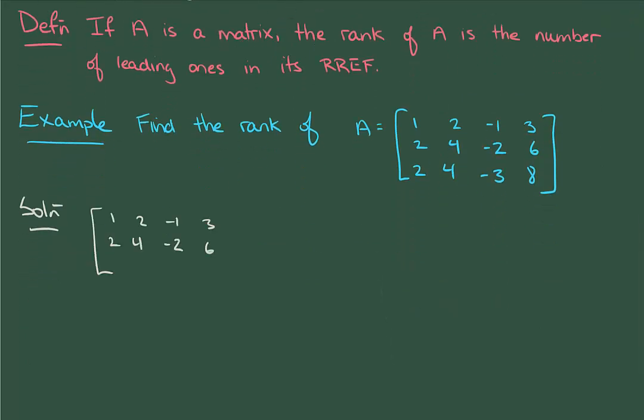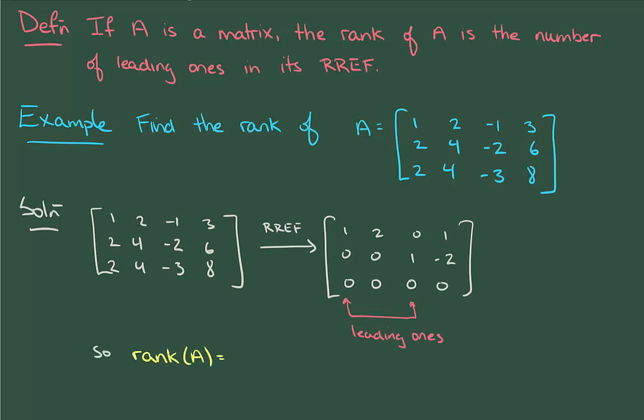I'm going to go straight to RREF, and I'm going to do this without writing down all the steps. That way we can check our answers, but we don't waste time doing the whole reduction. There are two leading ones, one in column one and one in column three, and so that tells us that the rank of this matrix is two. That's it.